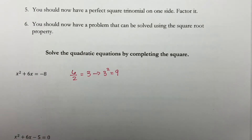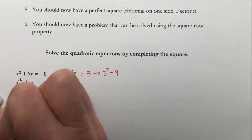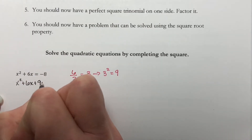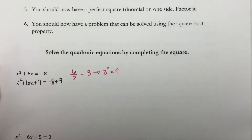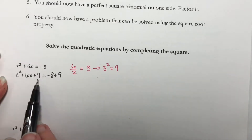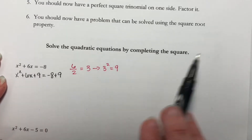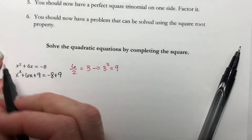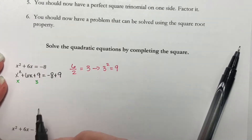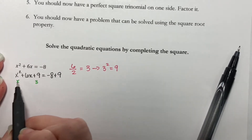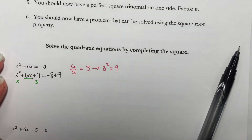Our next step is to actually add it to both sides. So that gives me x squared plus 6x plus 9 is equal to negative 8 plus 9. If we've done this correctly, we should have a perfect square trinomial right here. And if you want to check that, you take the square root of this, which would be x, and the square root of 9, which would be 3. If you multiply these two together and then double it, do you get 6x? Yes.